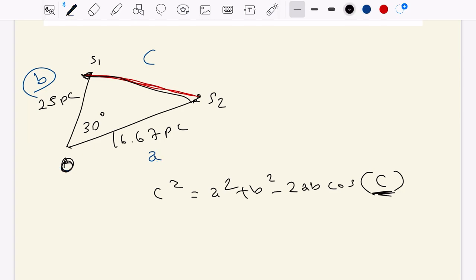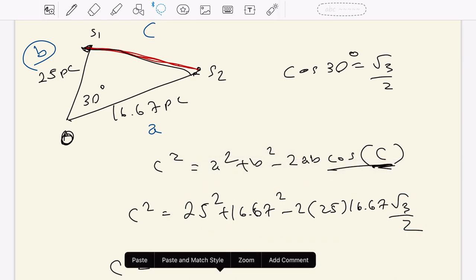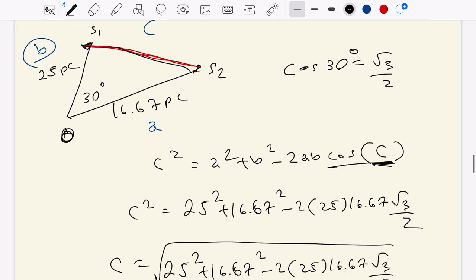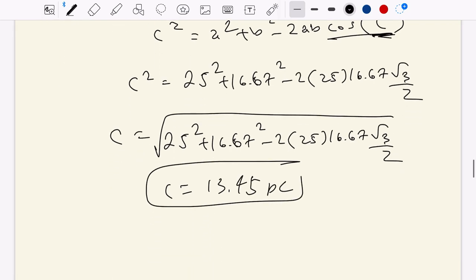So if we were to label this diagram, we would have C, A, B, where we define the sides. So let's go about computing this. So we're going to have C squared equals 25 squared plus 16.67 squared minus 2 times 25 times 16.67. Cosine of C, cosine of 30 degrees is root 3 over 2. So then we can type in root 3 over 2 right here. And so we're going to take the square root of this quantity right here to get our final answer. Take the square root. And when you do that computation, I believe you get 13.5 parsecs. Let me double check that real quick. Okay, perfect. Yeah. So C equals about 13.45 pc. And that's your answer. Okay, final question.